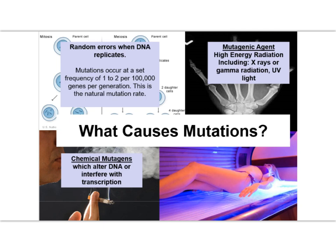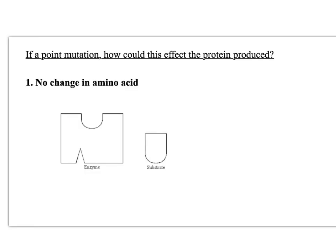Mutation naturally occurs during DNA replication in the S phase of interphase, and it occurs at a natural mutation rate. There are things that can drastically increase the rate of mutation. The key word you need to know is mutagens — mutagens are something which alter the DNA sequence. Examples of mutagenic agents include carcinogens, which are examples of mutagens.